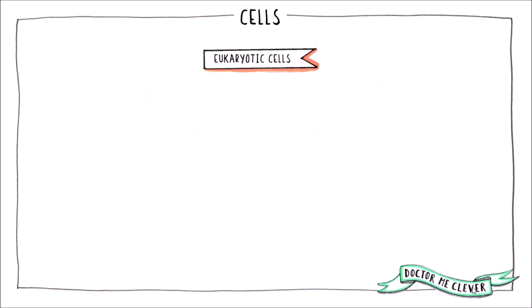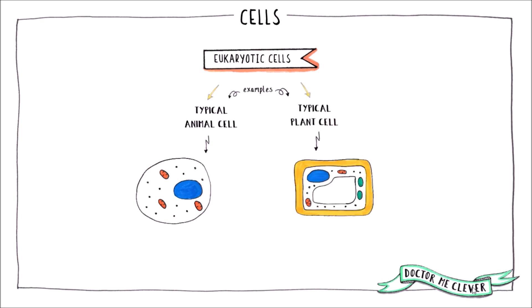You need to know some examples of eukaryotic cells for your exam. The first is an animal cell, and the second is a plant cell. You need to be able to draw and label the basic subcellular structures in these cell types.